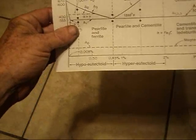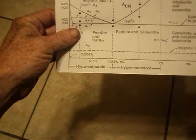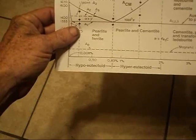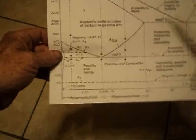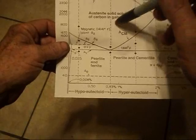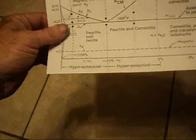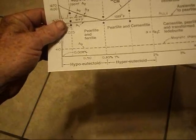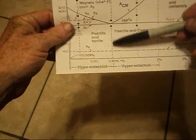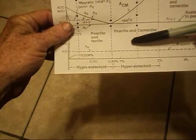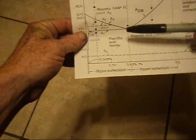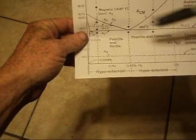And you can get heat treat information about any kind of steel out there under the sun. Just look on the internet. And it wouldn't hurt to get you one of these diagrams and just study it. Everything above this eutectoid point is known as a hyper-eutectoid. Anything below it is a hypo-eutectoid.